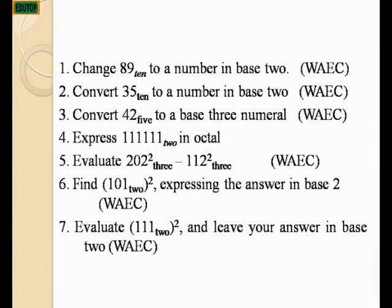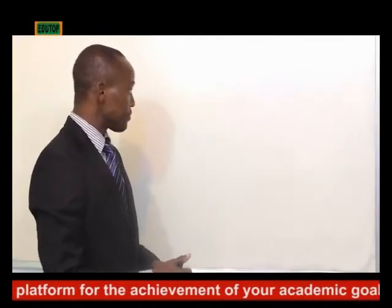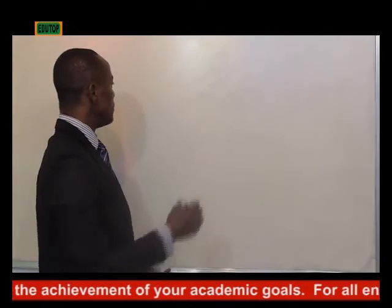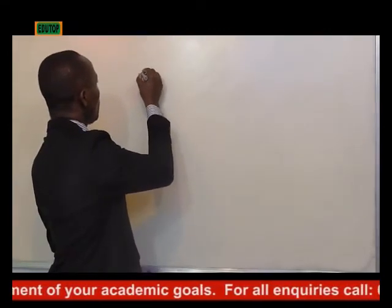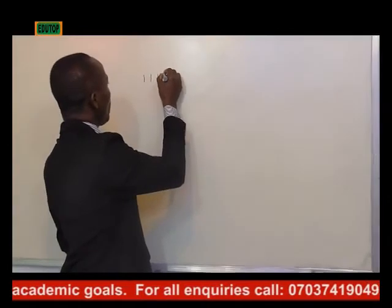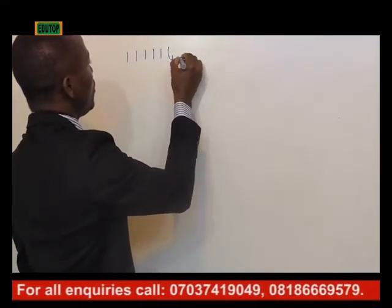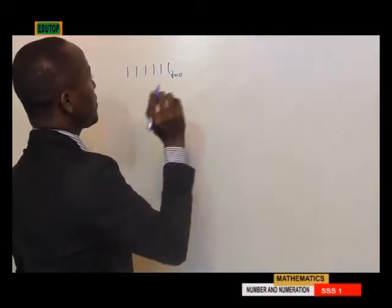Question number 4 states: express 1111111 base 2 in octal. To do this, we first convert base 2 to base 10, and then convert that result to base 8. We start by writing out 1111111 base 2, which we are converting to base 8.